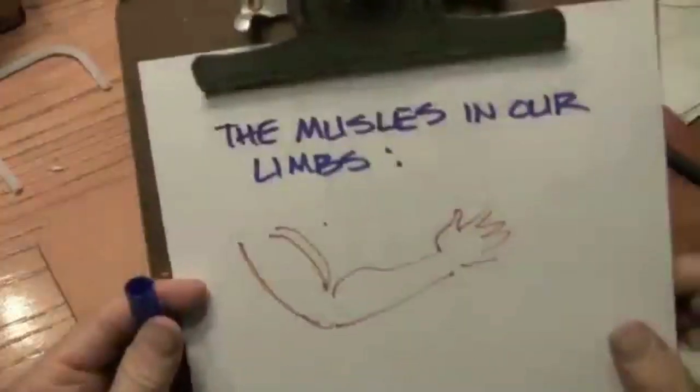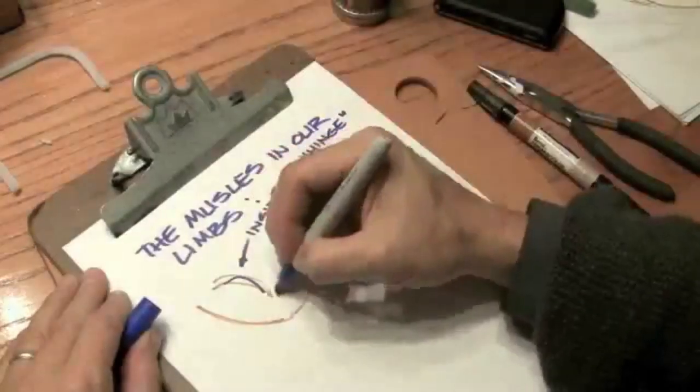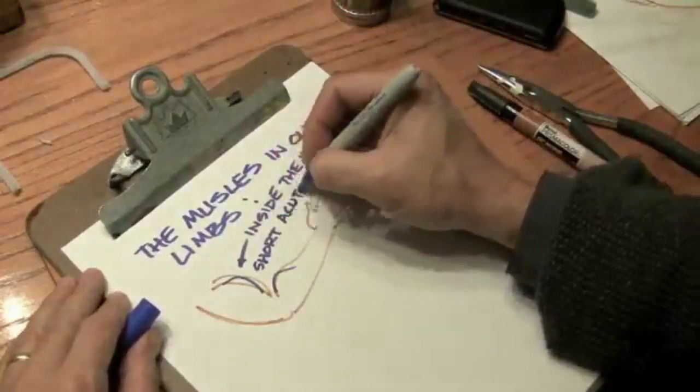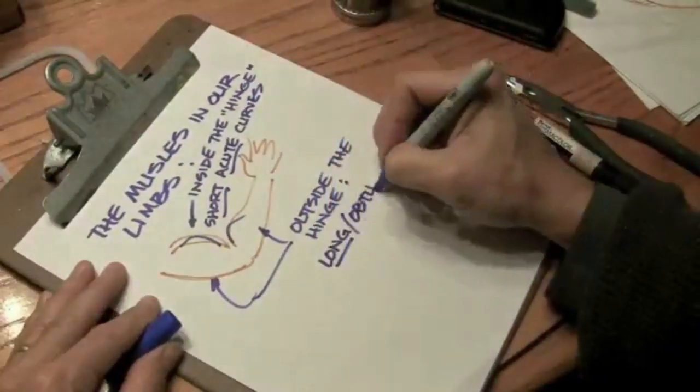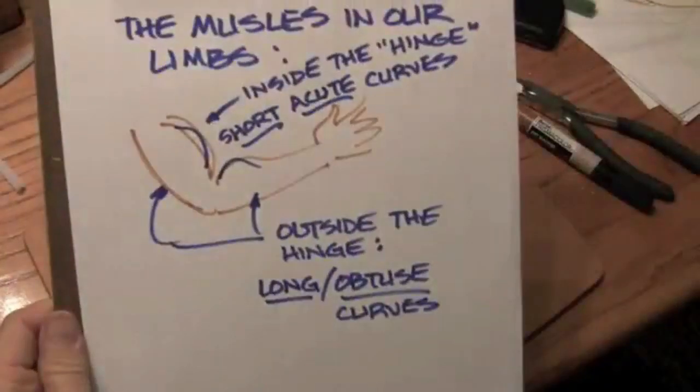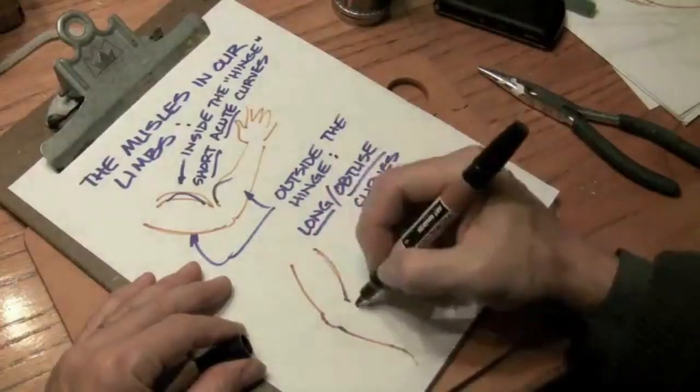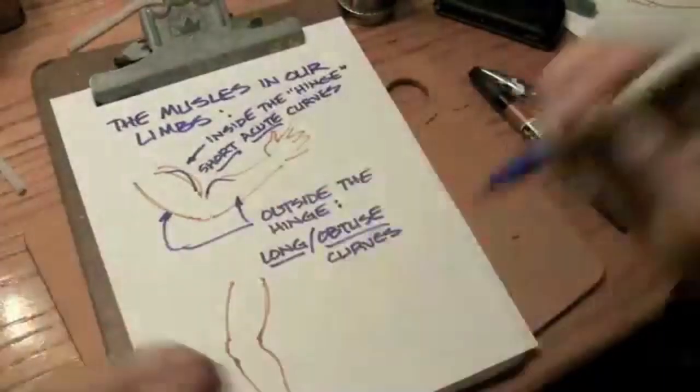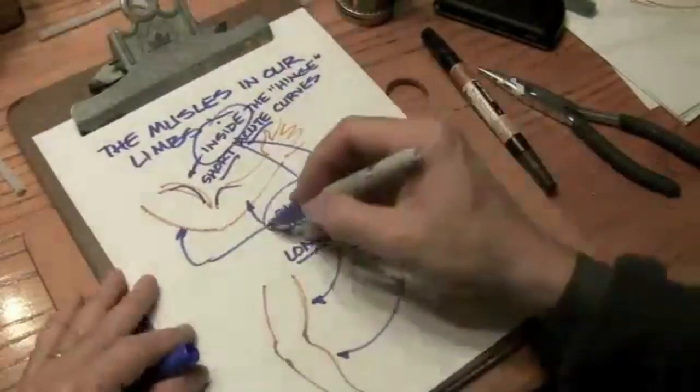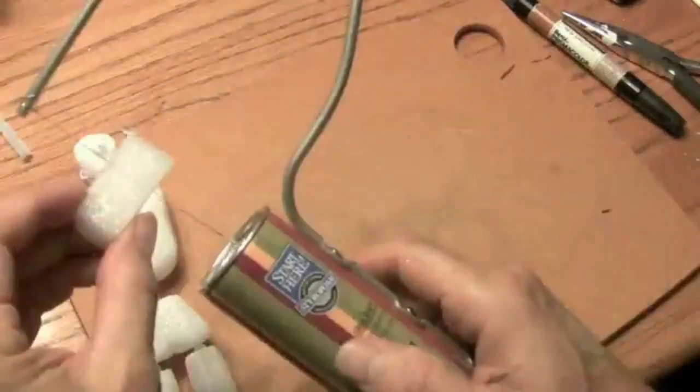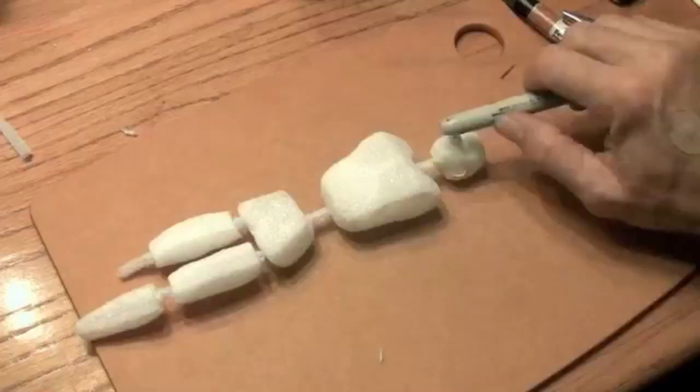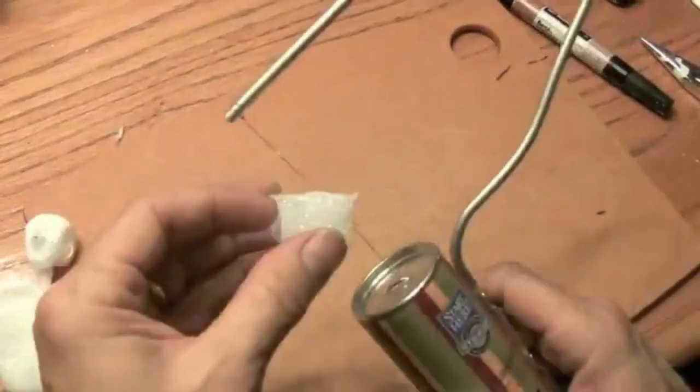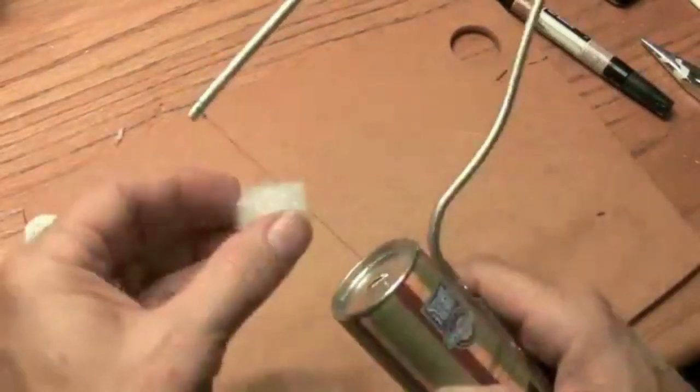Now the arm. Here's a principle to keep in mind: the muscle masses on our limbs inside the joints are curved and short. Outside they're long and obtuse, that is they're not acute angles, they're long curves. Something to keep in mind. And again, please understand that this is just beginning figure drawing. We could get into much more detail about the shapes of every one of these muscles and bones, and I recommend that you do that.